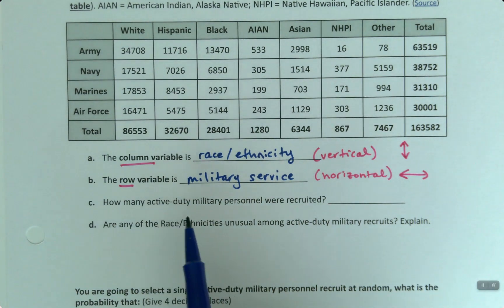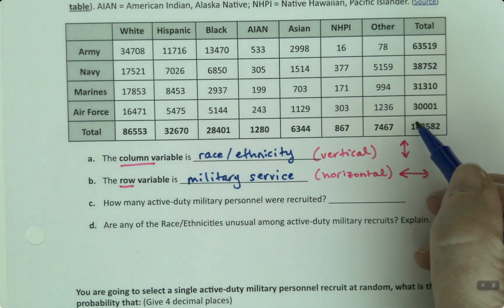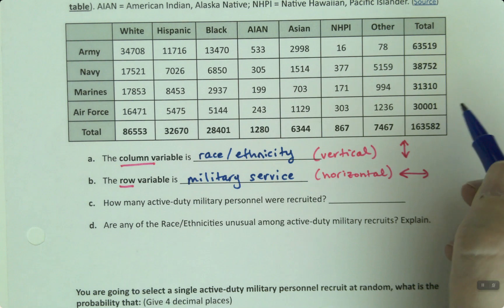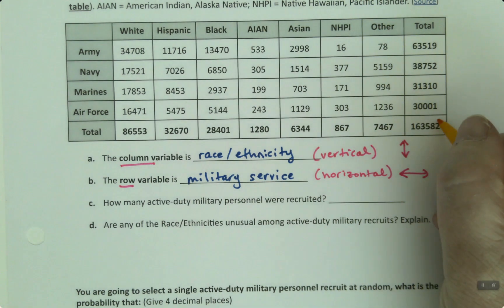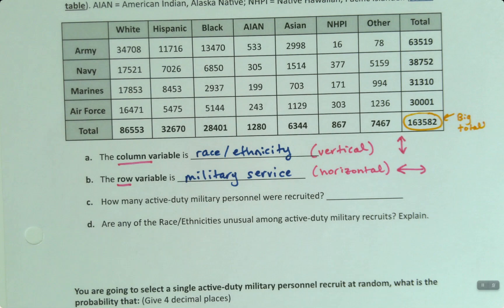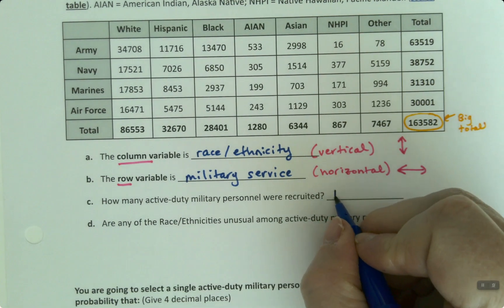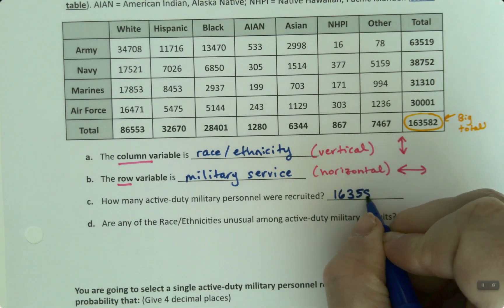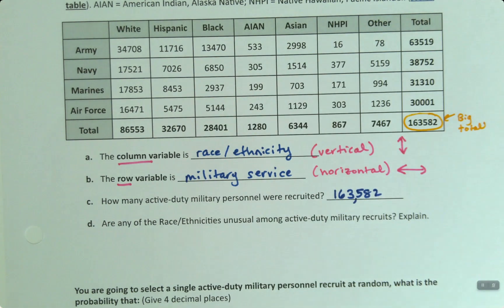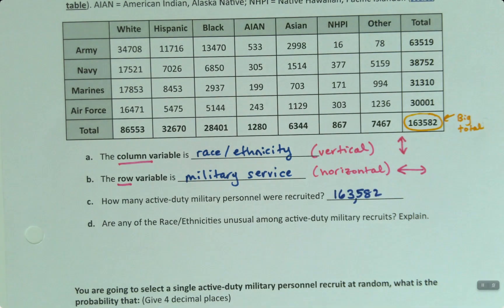So how many active-duty military personnel were recruited in 2018? And that's this big number down here. This is the big total. I'm going to actually kind of circle that one because it's really important. So that's the big total. The big sum for the whole thing. So that would be the number 163,582. So there were 163,582 recruits to the military services in 2018.